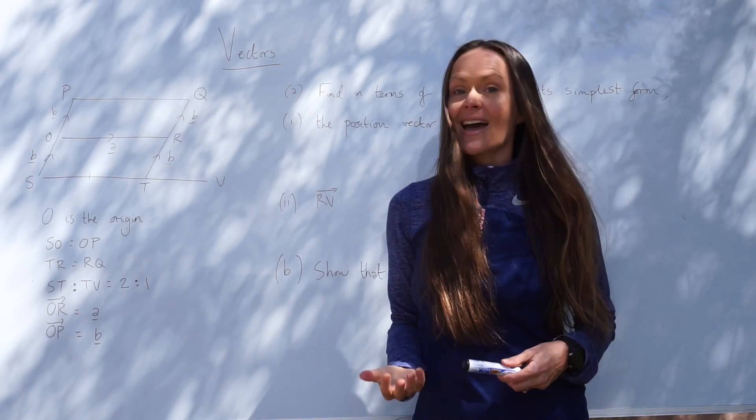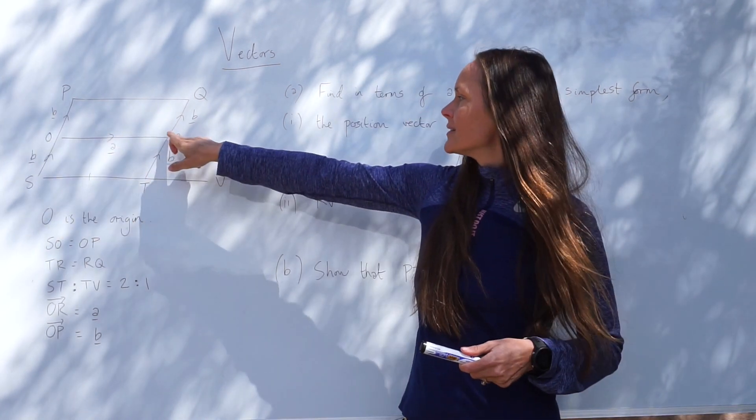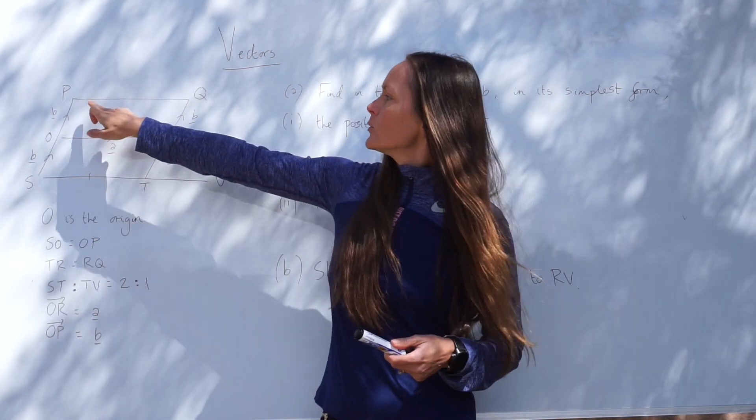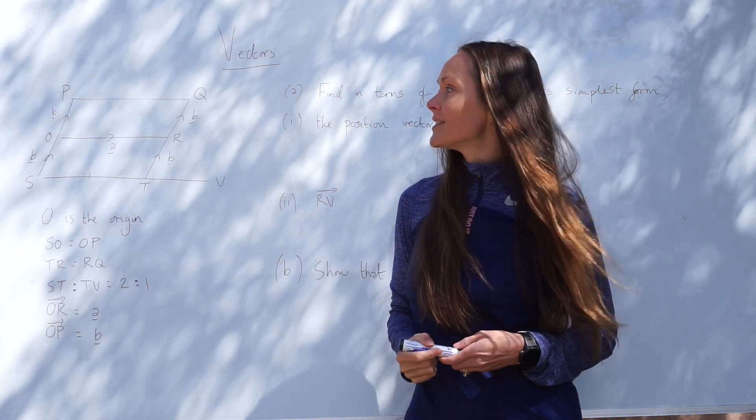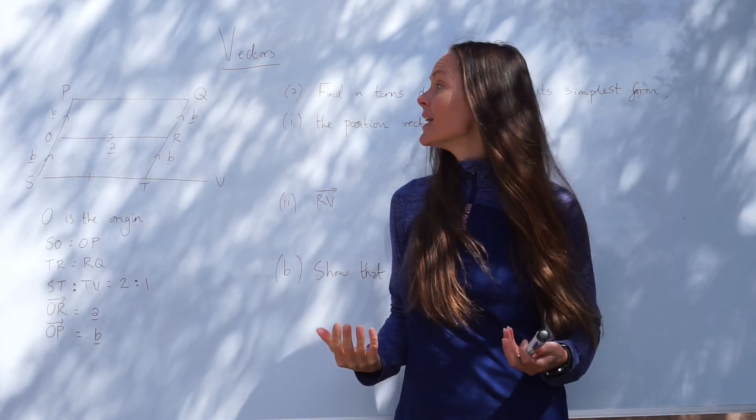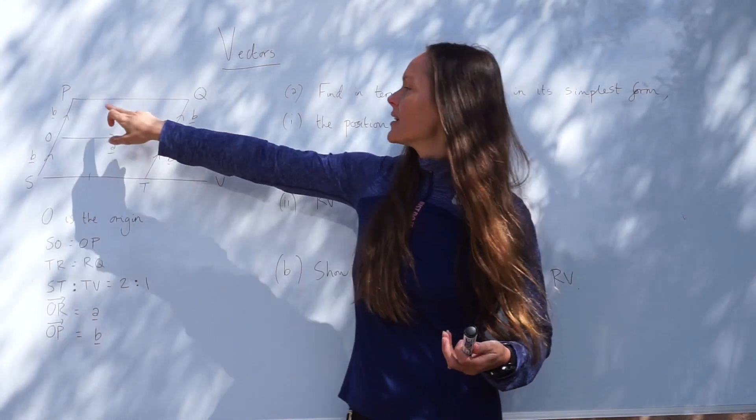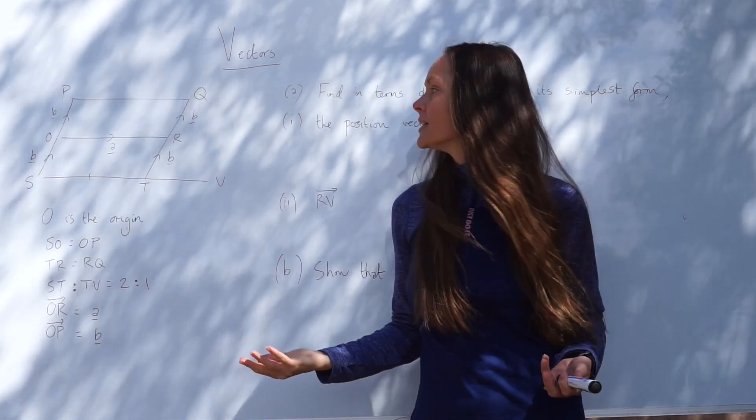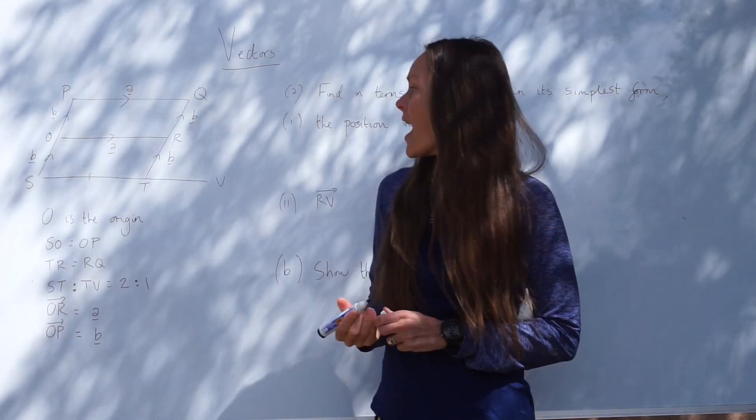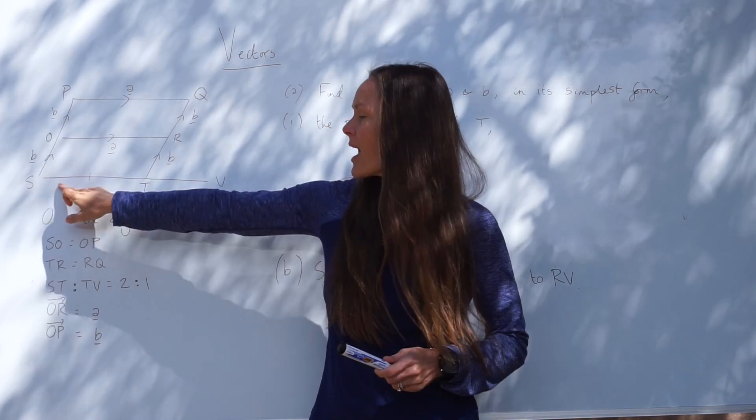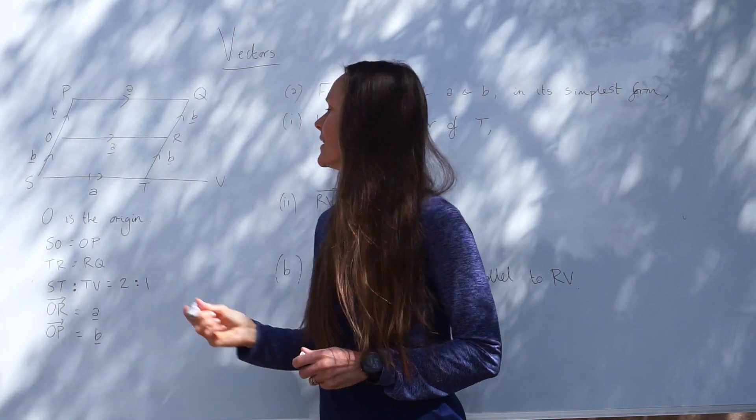If we look at vector A next, we can see when we travel from left to right, that's vector A, so we also know the line P to Q is also vector A. Remember, they're parallelograms, so this line is equal in length to this one and they're parallel to each other. At the bottom, we have another line that's parallel and the same length, ST, so this is also equal to vector A.